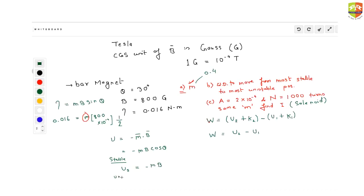For unstable configuration, you will have potential energy mB cos 180 degrees, which is minus mB into minus 1, so that is m into B. So U2 is unstable, which is mB minus minus mB. So the answer should be 2 times m into B. When you substitute the value, you will get 0.064 joules of work done.